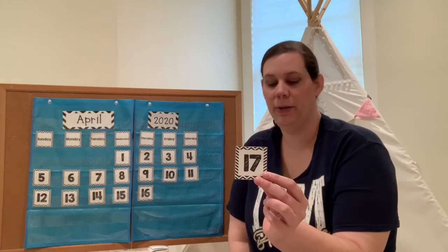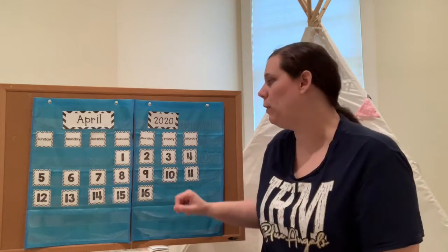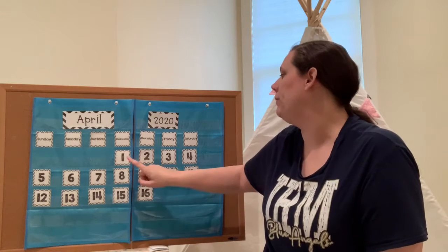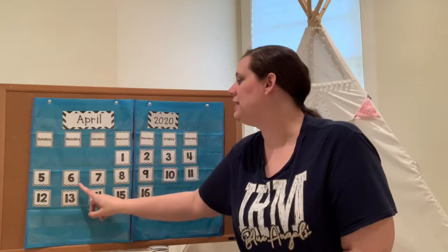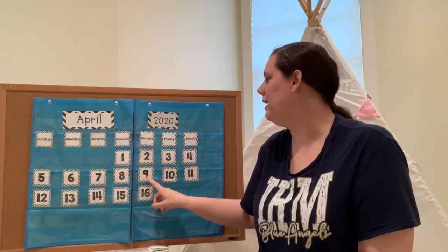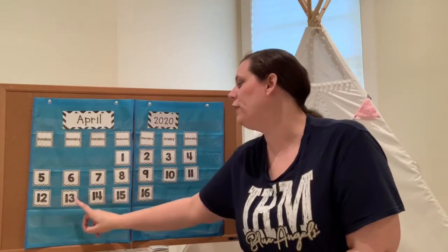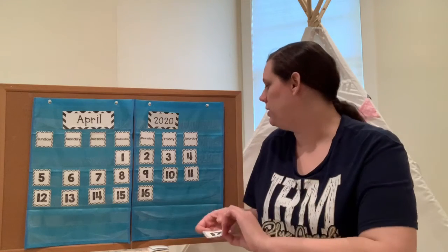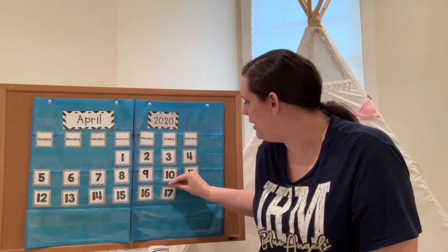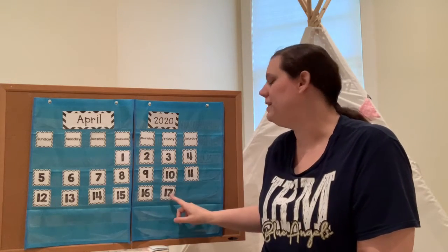Let's see what number goes with Friday this week. Let's go back through our days this month so far and count with me: 1, 2, 3, 4, 5, 6, 7, 8, 9, 10, 11, 12, 13, 14, 15, 16, and 17. So today's date is 17, and that makes today Friday, April the 17th.